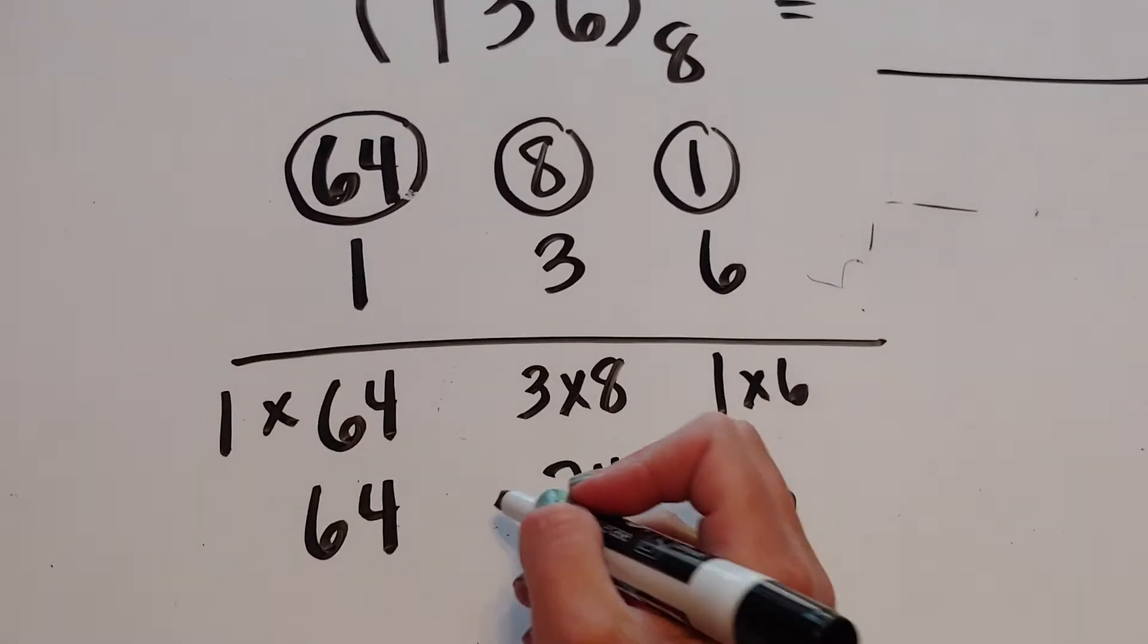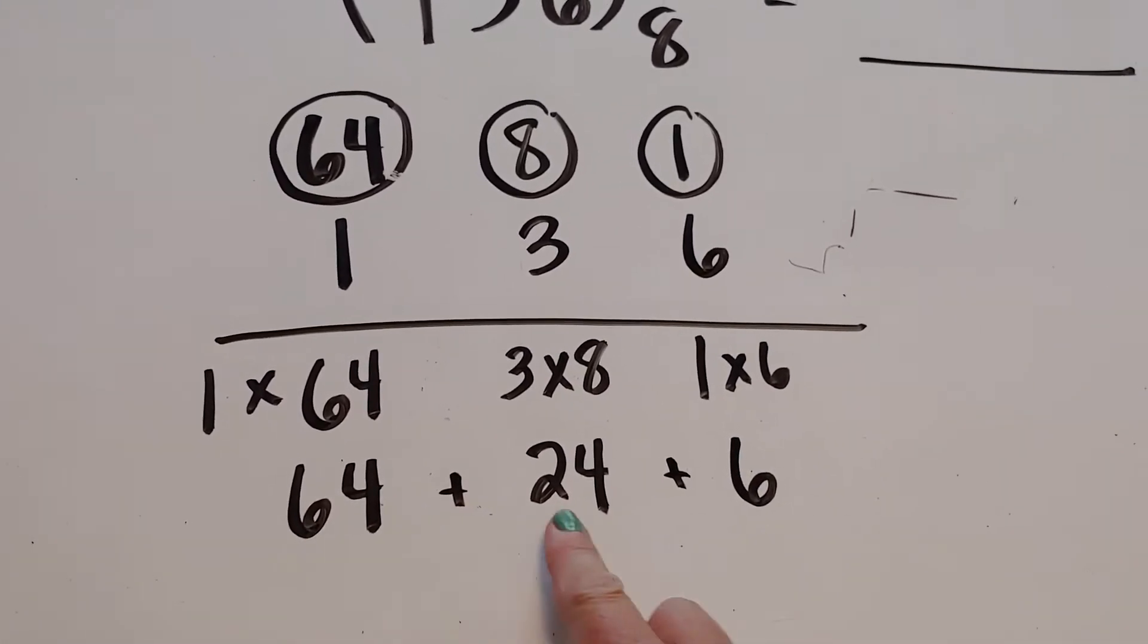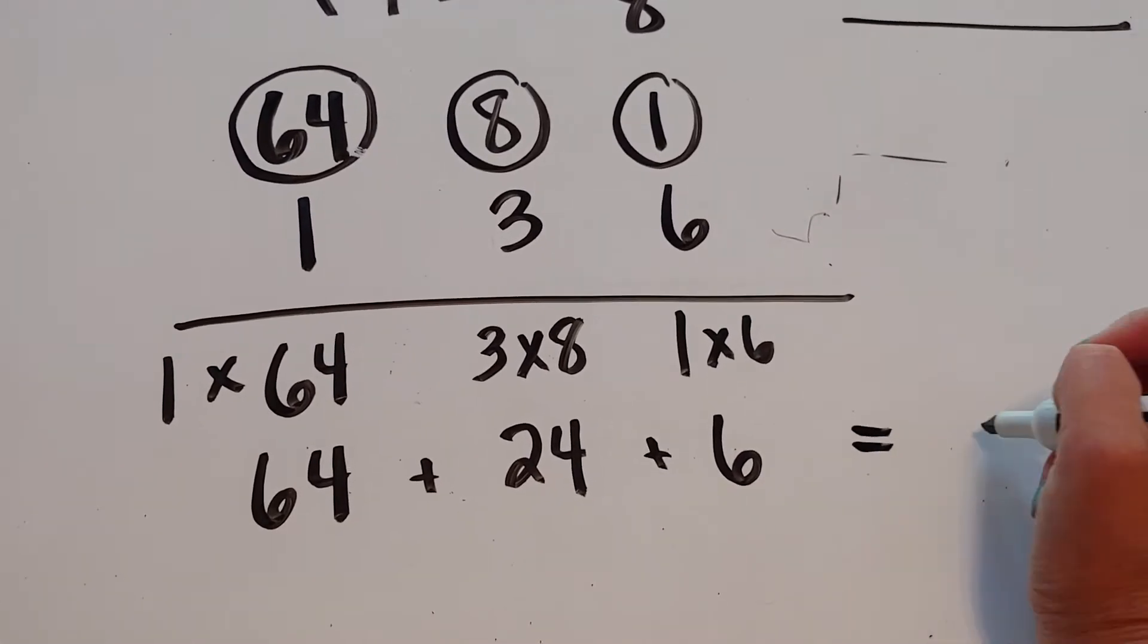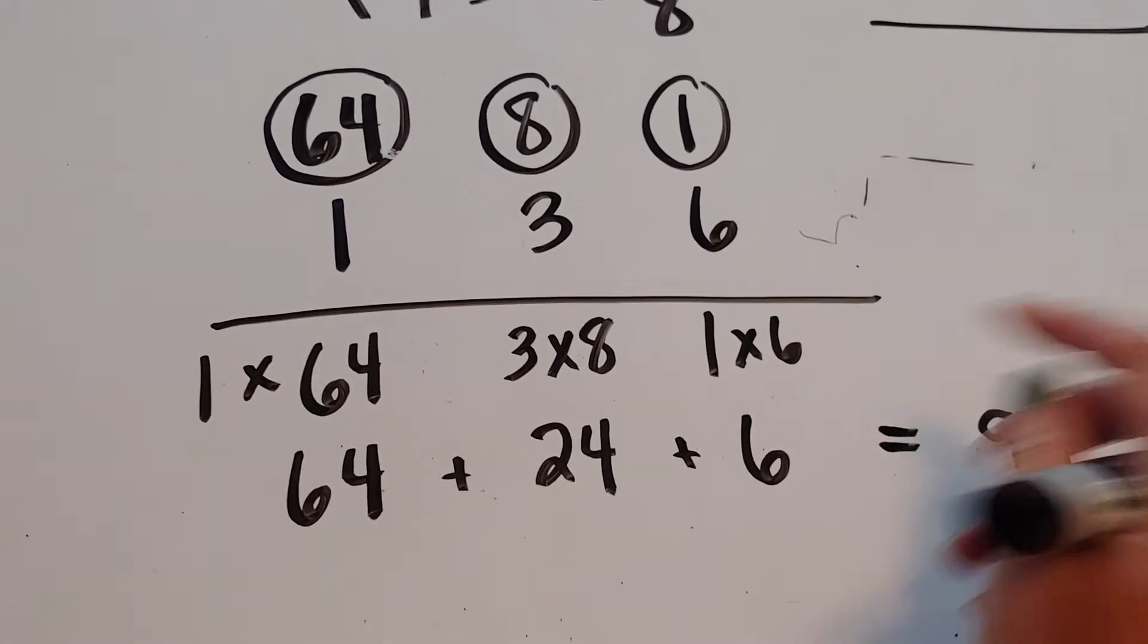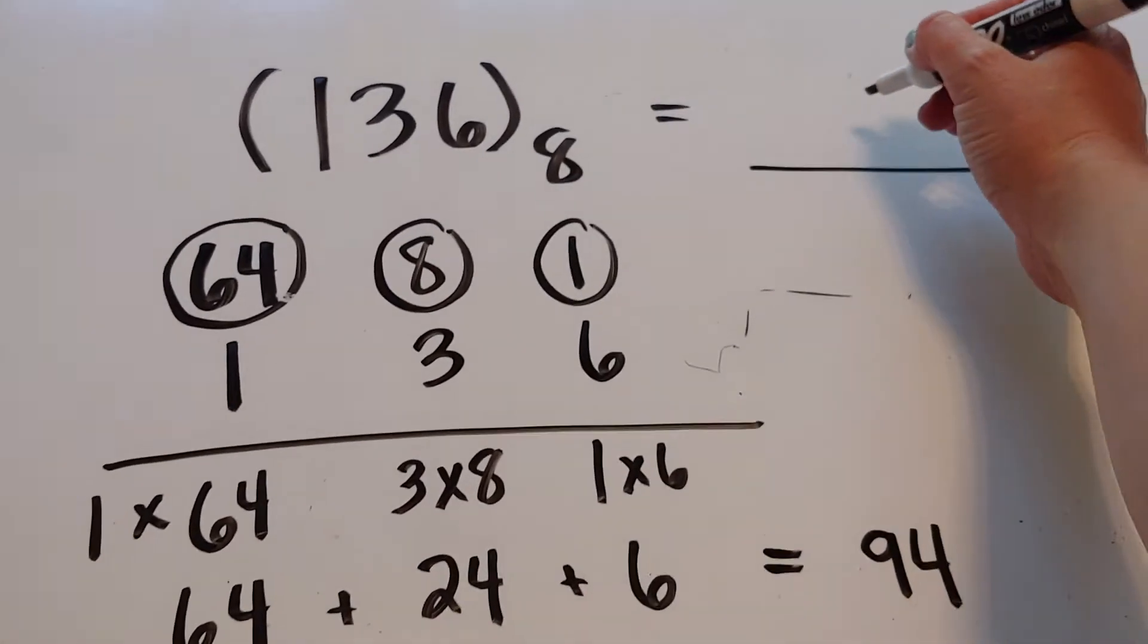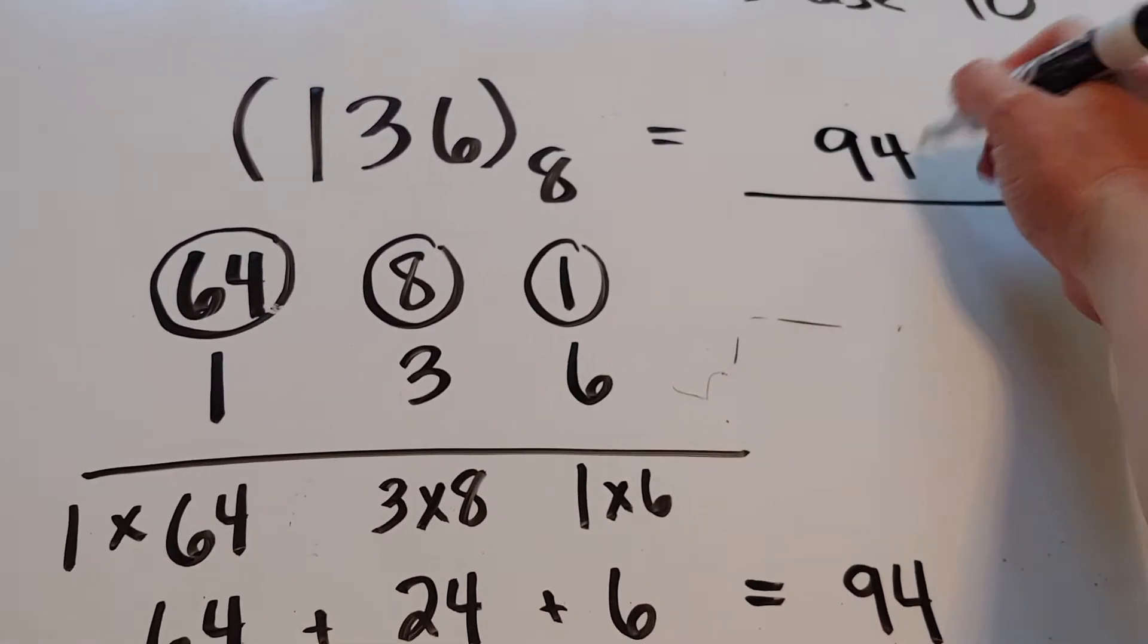All right, so now I want to add all of these together. So if I add 64 plus 24 plus 6, I believe, and feel free to get a calculator, I'm going to get 94. So the number 136 base 8 is the same thing as the number 94.